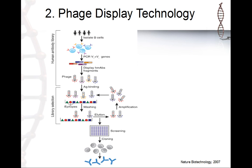Through biopanning you are making directed evolution, and the antibody with the best affinity to the epitope will be selected. Then you can grow and produce your antibody.